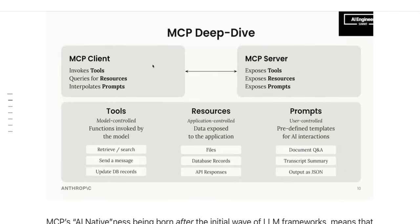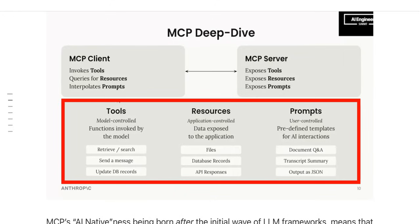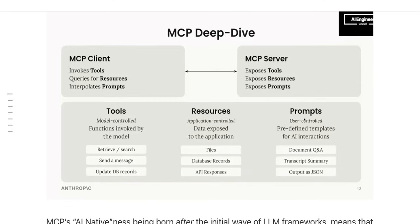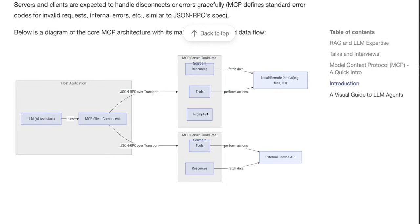There are two main components: one is the client and the other one is the server. The server has access to a number of tools. There are certain resources available and there are prompts, which are predefined templates for AI interactions that control the behavior. The most important thing to consider here is the tool definition. Tools are able to perform actions such as make API calls, execute different code, and that's where it makes them susceptible to malicious actions.